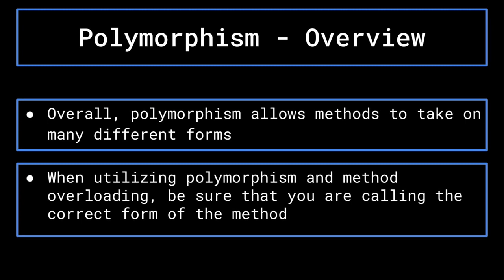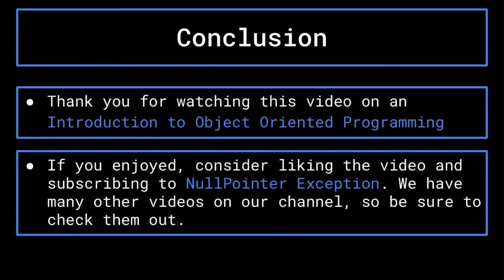That does it for polymorphism. And with the end of polymorphism, the final of the four main principles, comes the end of this video on an introduction to object oriented programming. If you enjoyed, consider liking and subscribing to Null Pointer Exception, and check out some of our other videos in which we cover a variety of other topics that you may find helpful. Thanks for watching.